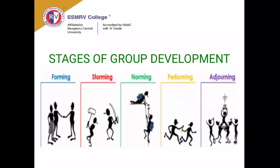The fifth and last stage is the adjourning stage. If your group is ad hoc or made for a specific purpose, this is the stage where you achieve the objective you were brought together for, say goodbye to members, and leave the group to return to where you came from. It is essentially the ending point — you achieve the objective, disband the group, and go back. It can also be called the separation stage.